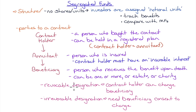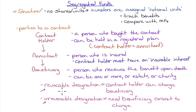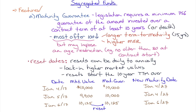Why would you ever choose an irrevocable designation over a revocable one? If you're facing an illness that will compromise your ability to make decisions, you might pick a family member and make it irrevocable — so that when you're in a situation where you can't distinguish what's going on, you cannot be tricked or led away from your original decision. That's when an irrevocable designation makes sense.